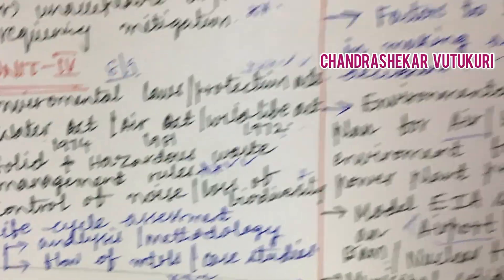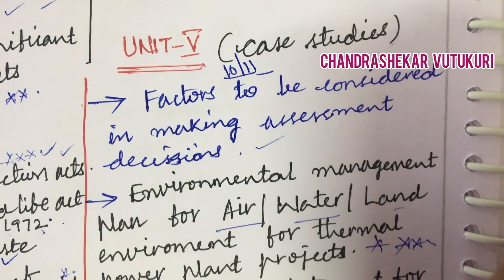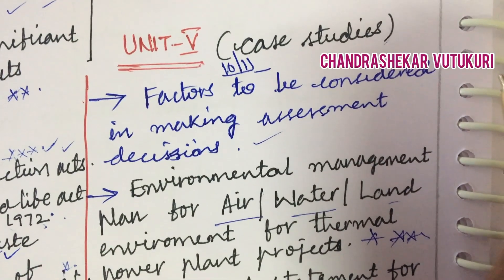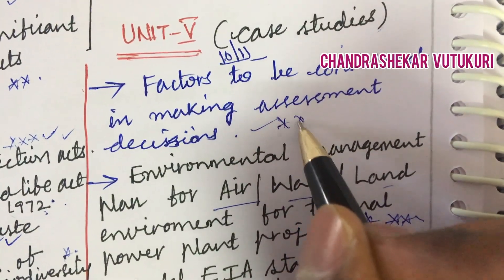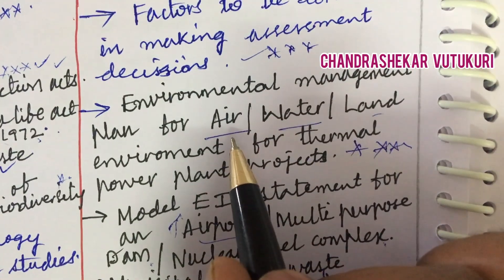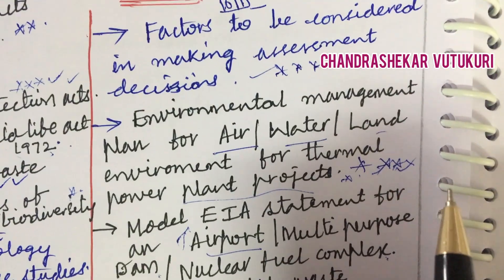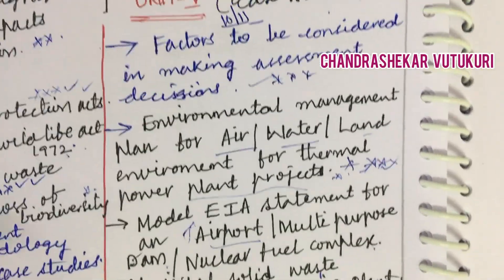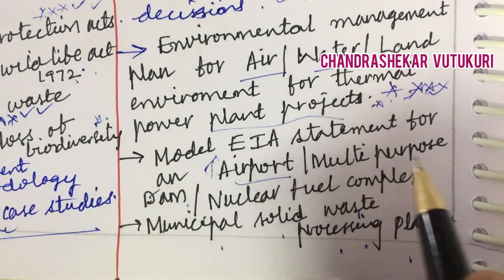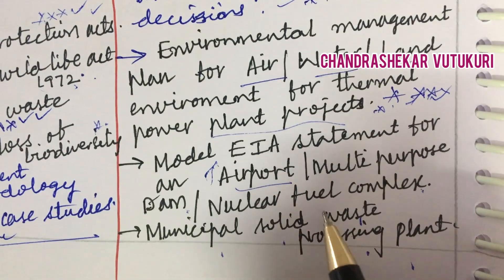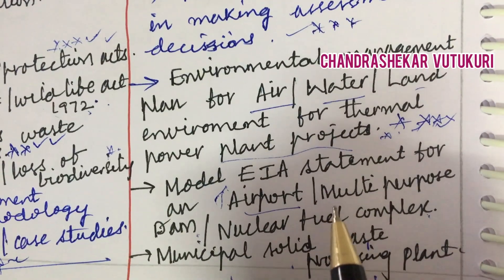Do not skip Unit 4 or Unit 5. Unit 5 is all about case studies, which you can write in general language by working through at least one or two examples from the textbook. Facts to be considered in making assessment decisions are a top question. The environmental management plan for a water or land environment for a thermal power plant project is a top question and may come as a direct 10-mark question in questions 10 or 11. Model EIA statements for an airport, multi-purpose dam, nuclear fuel complex, or municipal solid waste processing plant will also be asked.